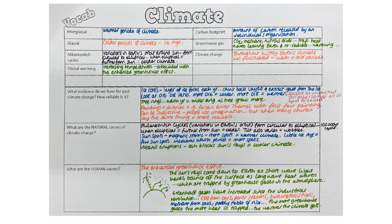You could talk about sunspots — the more spots there are on the sun, those magnetic storms, the warmer the climate is. During the Little Ice Age there were very few sunspots, whereas during the medieval warm period there were lots. Or you could talk about volcanic eruptions: when we have a volcanic eruption, a huge amount of ash blocks the sun's rays and the climate gets cooler.